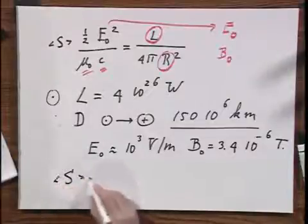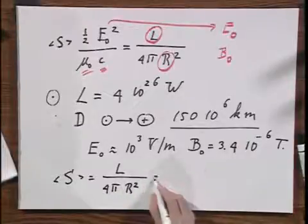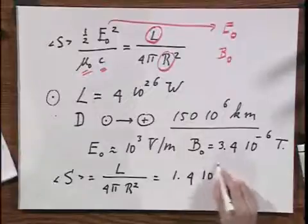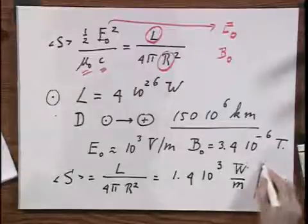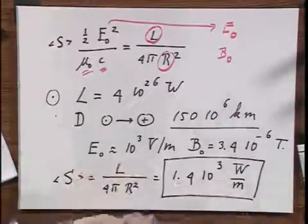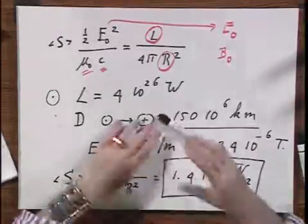And the mean value of the Poynting vector, which is the luminosity of the sun divided by 4πR² is the famous number 1.4×10³ watts per square meter. And this number, I will come back to, is very important. It's a little bit more than 1 kilowatt per square meter. And what does that mean? It means that the amount of energy from the sun that reaches the earth for every square meter, in the direction perpendicular to the radiation, is a little more than 1 kilowatt per square meter. 1,000 joules per second.